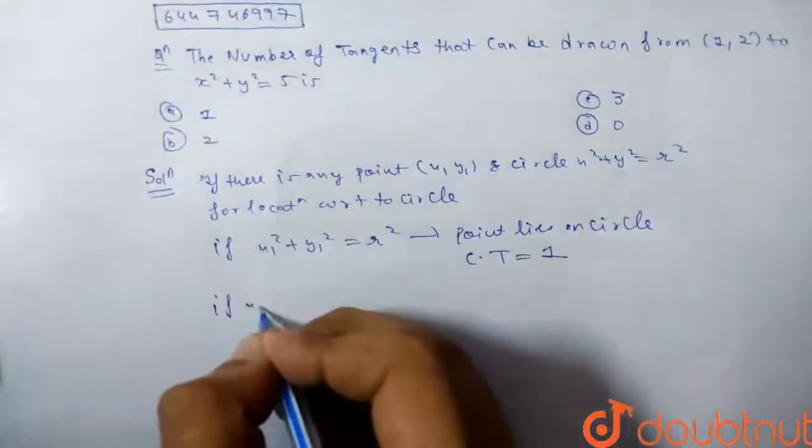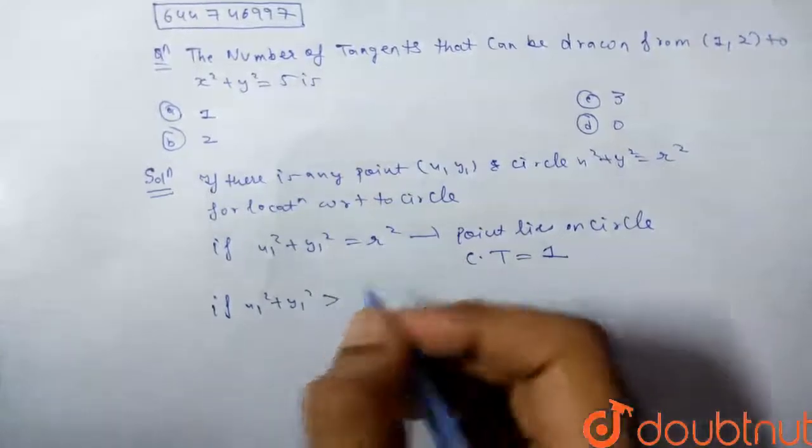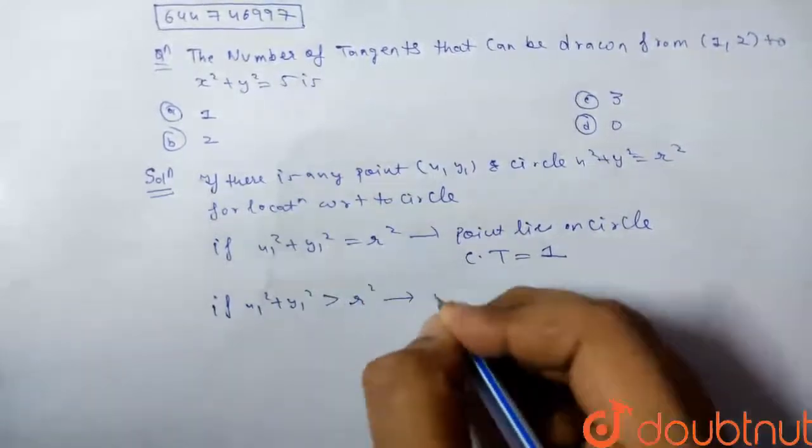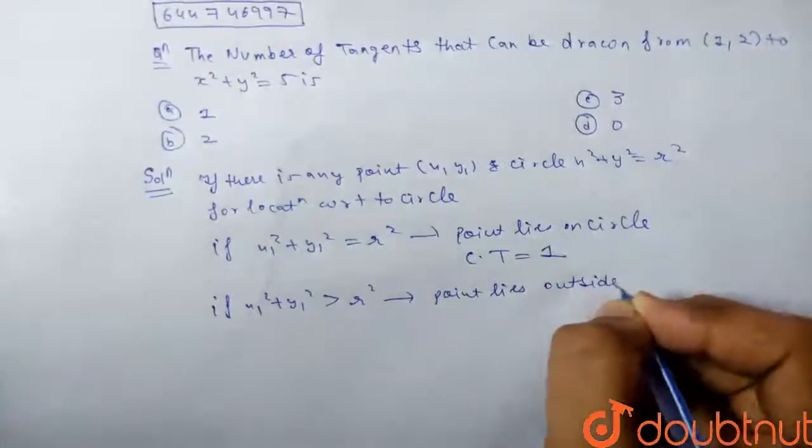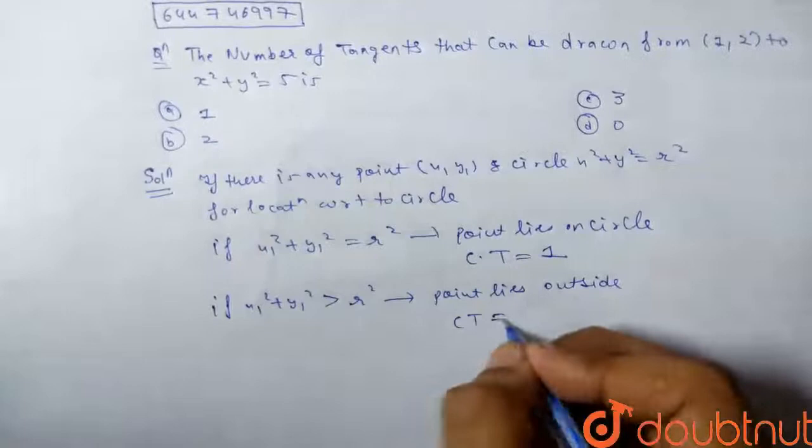If x₁² + y₁² > r², the point lies outside, and the common tangent is equal to 2.